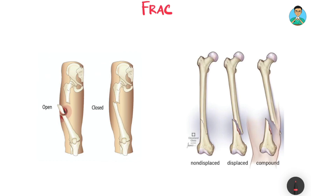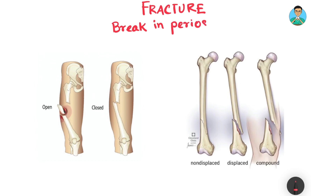A fracture simply means a break in the continuity of the periosteum — the outermost layer of a bone. A fracture means the breaking of the bone into two pieces.